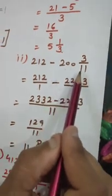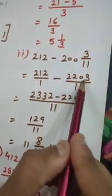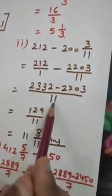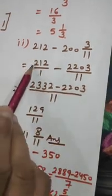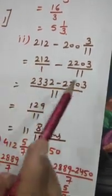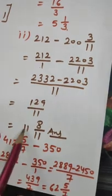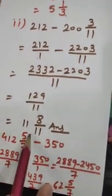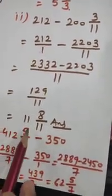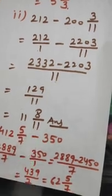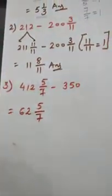You are multiplying 200 into 11, then adding 3. Again, you are taking LCM as 11. Then 11 is multiplied by 212. And then subtraction. And then again conversion into a fraction. This is really very lengthy method. But we can do within fraction of time. Even orally also we can do.